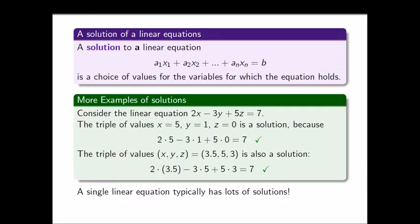Let's look at another example. This time we have a linear equation with three variables x, y, and z. If we choose values of x, y, and z that satisfy the equation, those values form a solution. If we choose x equals 5, y equals 1, and z equals 0, the left-hand side becomes 10 minus 3 plus 0, which is 7 — the same as the right-hand side. Therefore, 5, 1, and 0 form a solution.